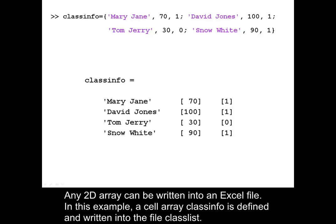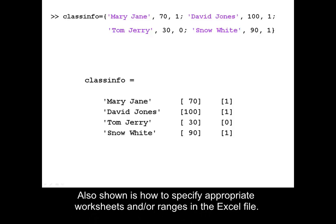In this example, a cellarray classinfo is defined and written into the file classlist. Also shown is how to specify appropriate worksheets and/or ranges in the Excel file.